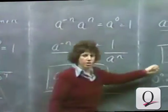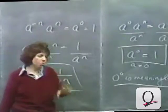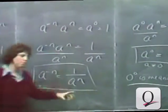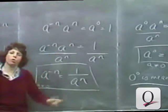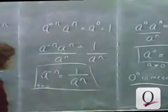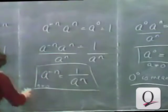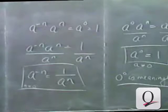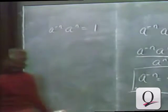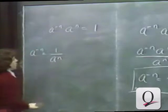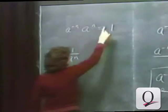It should be pointed out that these are definitions. Zero and negative exponents had no meaning before this. We are defining a to the 0 to be 1, and a to the minus n to be 1 over a to the n. By doing this, the rules that we have for natural number exponents will also hold true for 0 and negative exponents as well. When we divided both sides by a to the n, we got a to the minus n is 1 over a to the n.